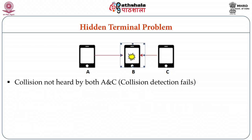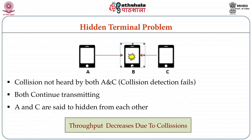The worst thing is that these collisions are also not heard by A and C. Both continue transmitting because A and C are hidden from each other, and collision detection also fails. These collided packets have to be resent. Hence, the hidden terminal problem drastically reduces the throughput.